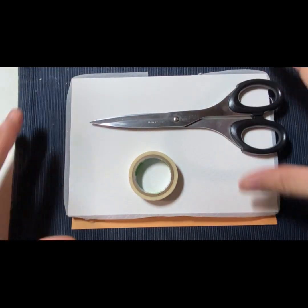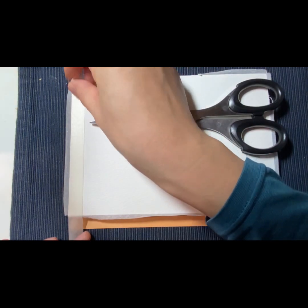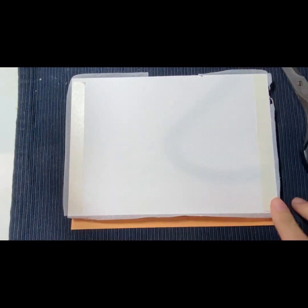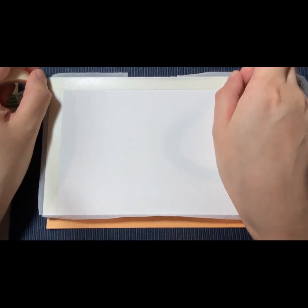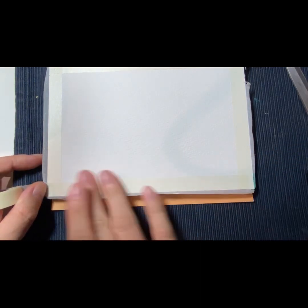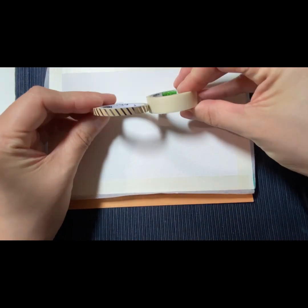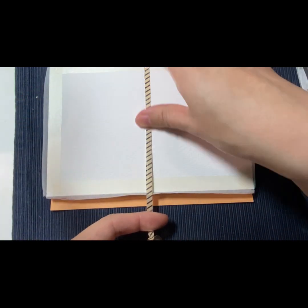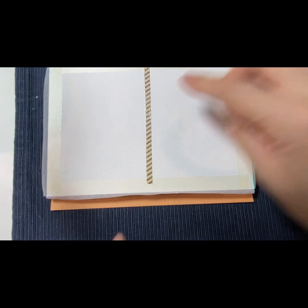To start, I want to show you how I tape around the watercolor paper. I want to create this very clear, clean line by the border. So as you can see, I'm taping around it. And I wanted to create a thinner space in between two almost identical paintings I'm going to make.